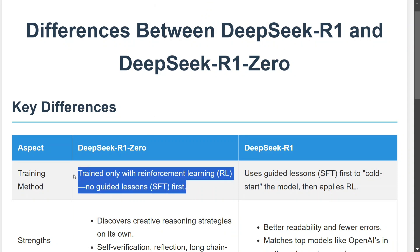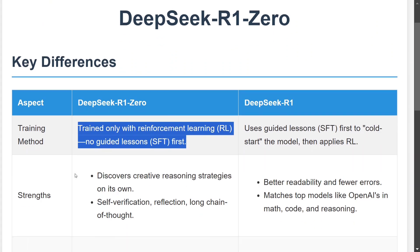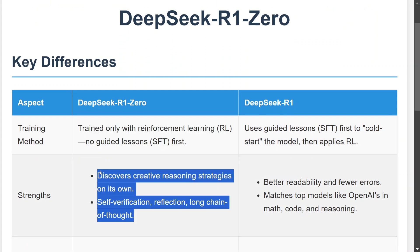The crucial difference between the two models is that DeepSeek R1-Zero is trained only using reinforcement learning — no supervised fine-tuning is used. In the case of DeepSeek R1, supervised fine-tuning is applied first and then reinforcement learning. So R1 is essentially SFT plus RL, while R1-Zero is just RL.